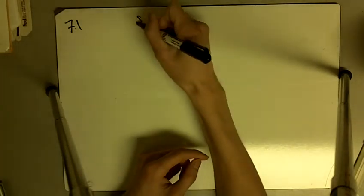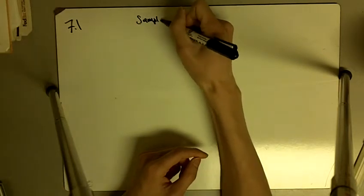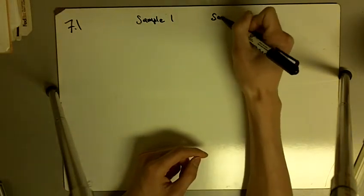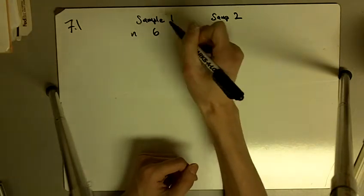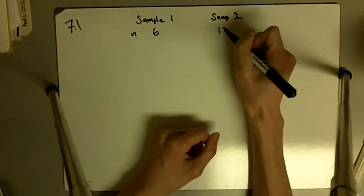Exercise 7.1 says data from two samples give the following results. We have sample 1 and sample 2. There were 6 in sample 1 and 12 in sample 2.